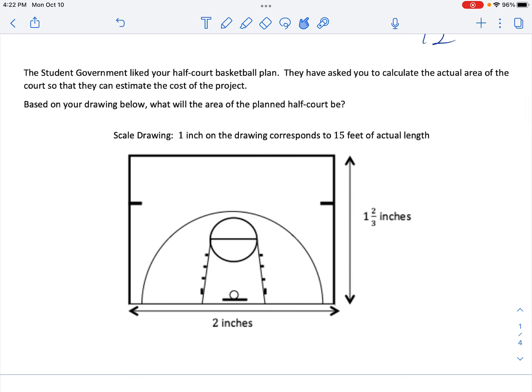Now we have a basketball court. Calculate the actual area of the court. Scale Drawing. 1 inch on the drawing. This is the scale drawing. It's the smaller one. This is the scale. 1 inch on the drawing corresponds to 15 feet of actual.